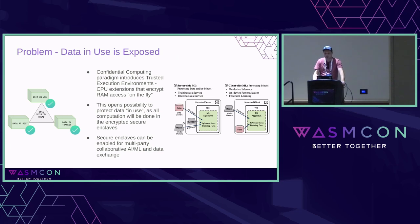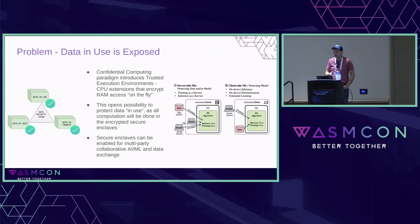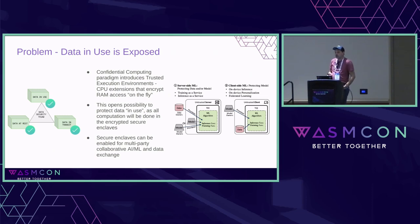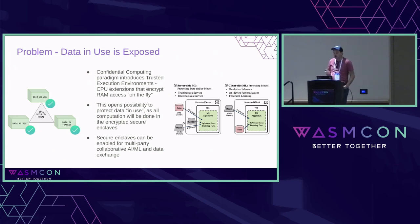Confidential computing works because between the CPU and RAM there is a cryptographic process happening on the fly, so the portion of RAM the VM occupies is always encrypted. This means we can do centralized machine learning — bringing data and model into the trusted execution environment — or we can do decentralized, federated machine learning and many different scenarios.